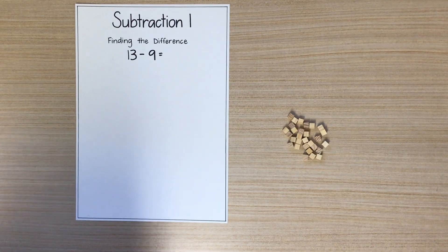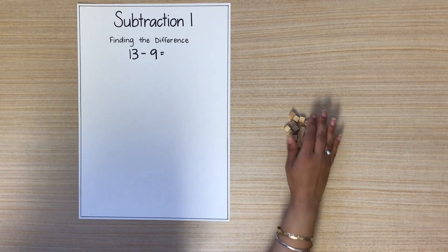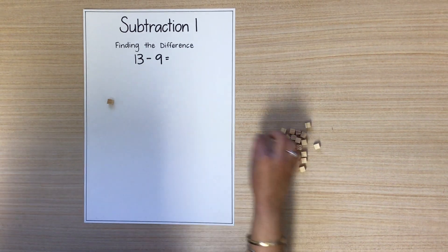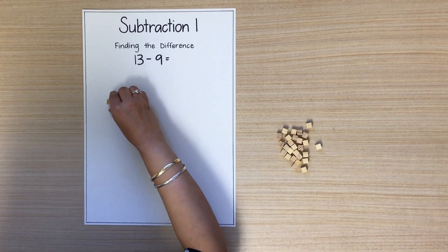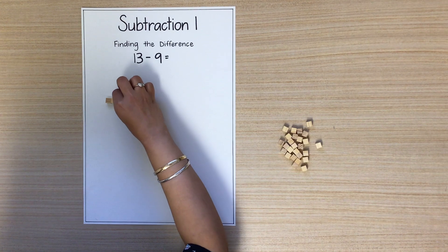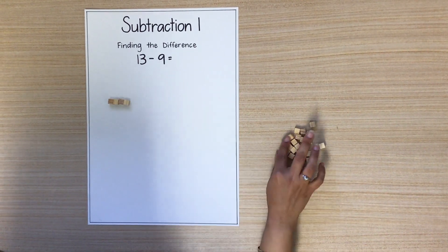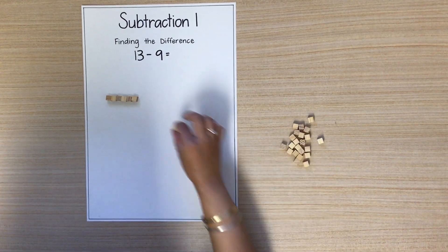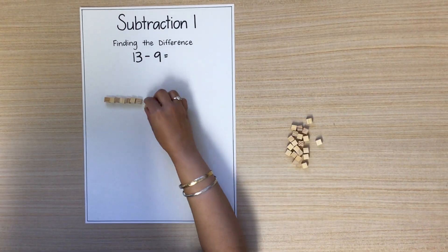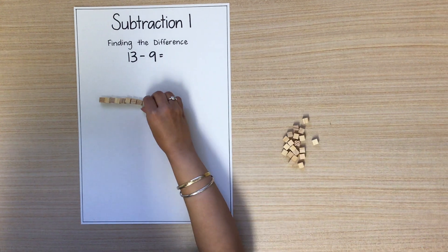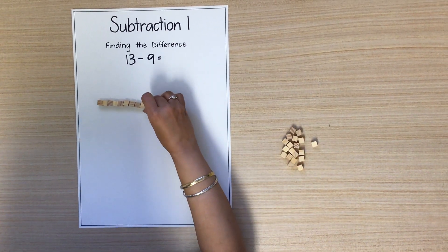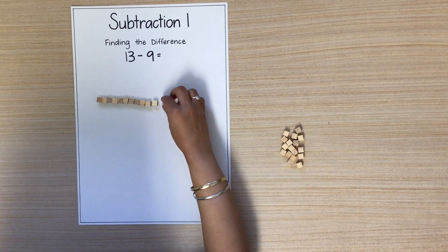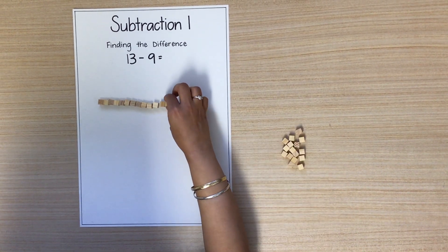First we need to get 13 MAB blocks and place them in a line. One, two, three, four, five, six, seven, eight, nine, ten, eleven, twelve, thirteen.